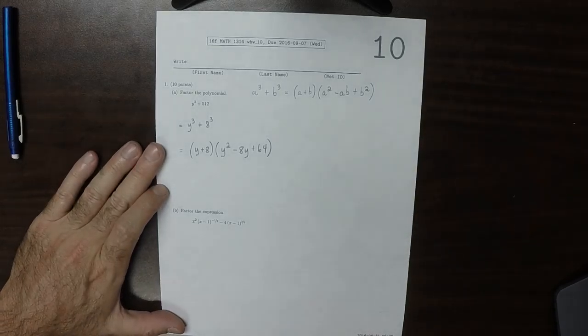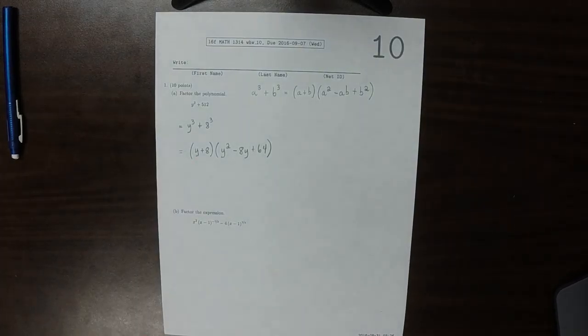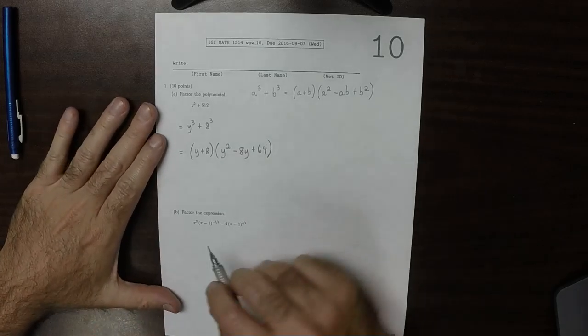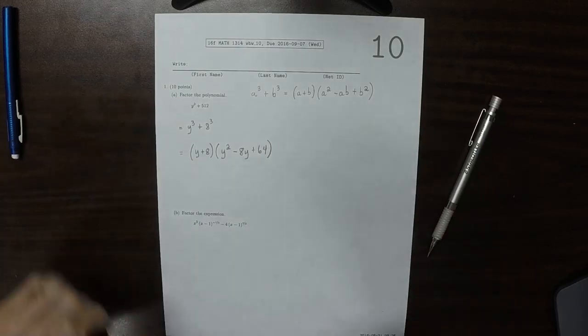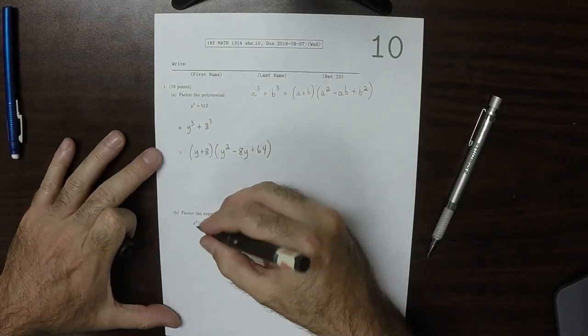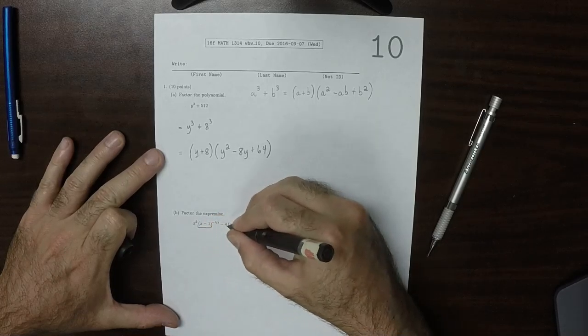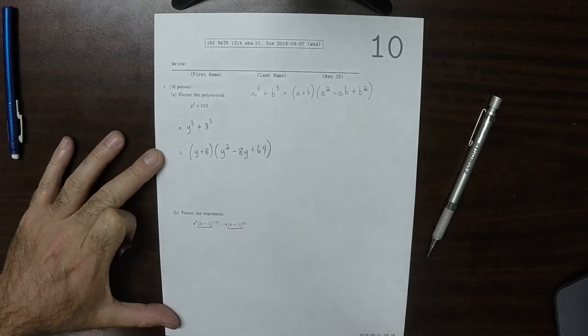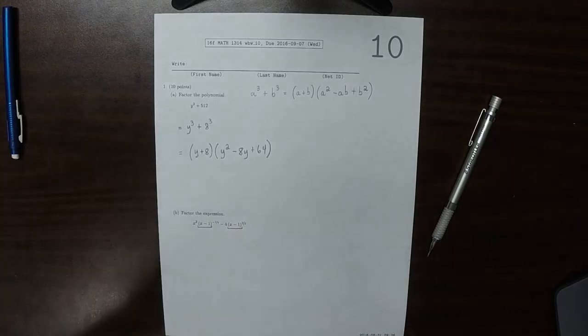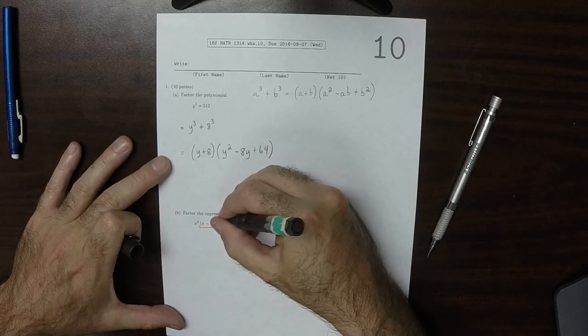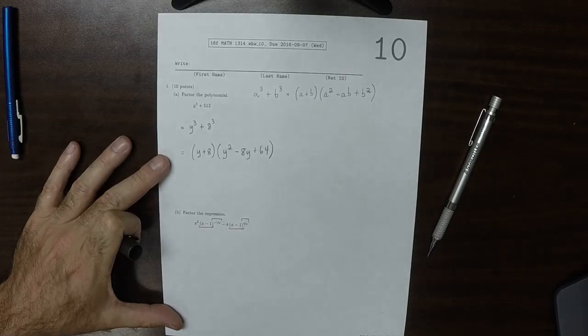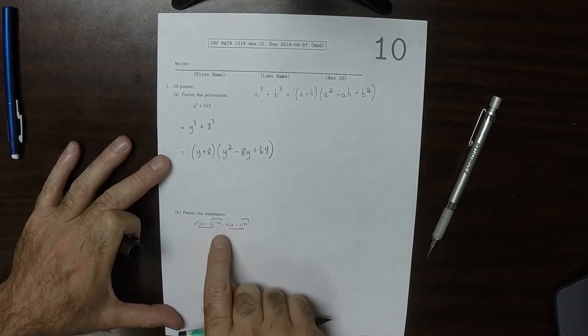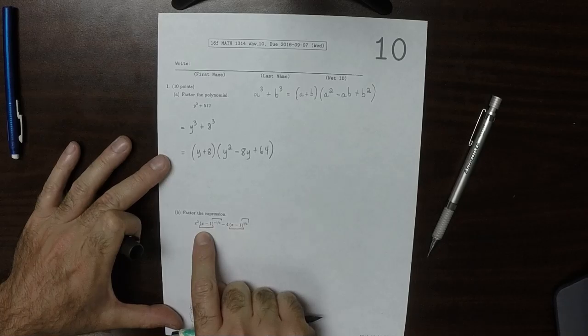So this expression, we want to factor it as much as possible. This factor (x minus 1) occurs here and also here, and the exponents are negative 1/3 and 2/3. That means we can factor out some power of (x minus 1) from both terms.